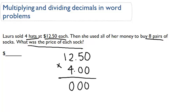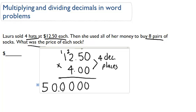Four times zero is zero. Four times five is 20. Four times two is eight, plus two is 10. Carry that one. Four times one is four, plus one is five. We have a total of four decimal places.